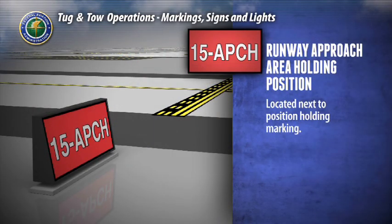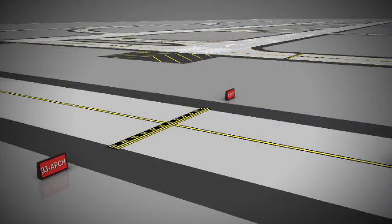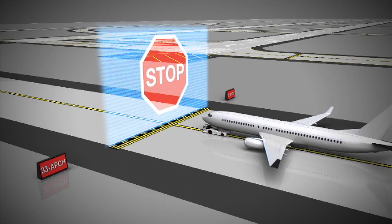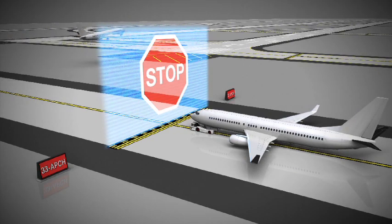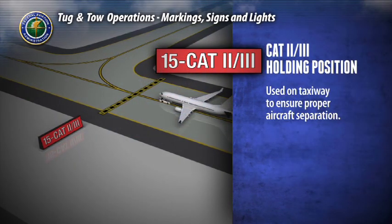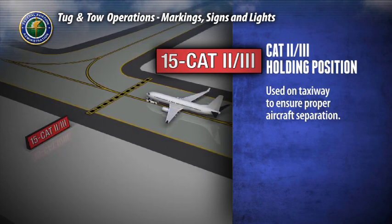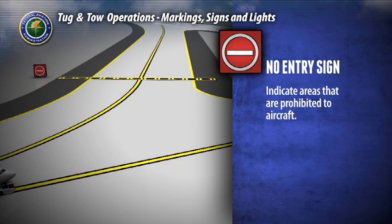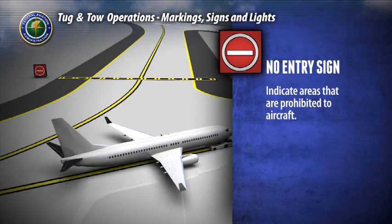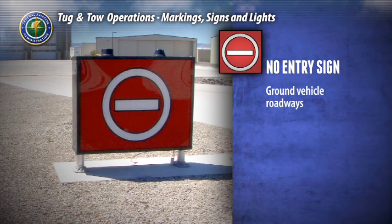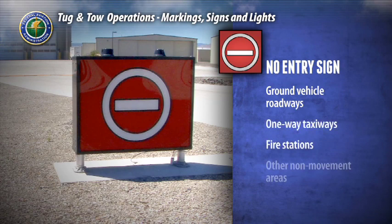The runway approach area holding position sign will be located on the taxiway next to yellow holding position markers. Its purpose is to hold an aircraft on a taxiway short of a runway approach or departure area so the aircraft does not interfere with runway operations, such as penetrating the airspace required for the approach or departure runway or crossing through the runway safety area. You may not move beyond this sign until cleared by air traffic control. The Cat 2 and Cat 3 holding position sign is used on a taxiway parallel to a runway during Cat 2 and Cat 3 operations to ensure proper aircraft separation. The no entry sign will be located at the entry point of areas prohibited to aircraft, such as ground vehicle roadways, one-way taxiways, fire stations, or other non-movement areas.